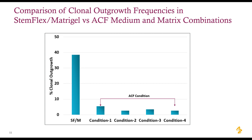This chart summarizes the differences in colony outgrowth efficiency between the StemFlex/Matrigel condition — which is very permissive for most iPSC cell lines — and any ACF condition. When we go from StemFlex to any ACF condition, there is a struggle; the cells do not want to grow. This is an area the field needs to pay more attention to. Work is going on around this, and we'll get solutions to this very important aspect in coming years.